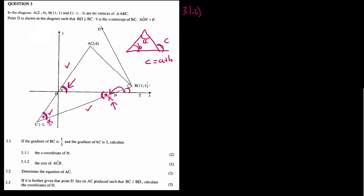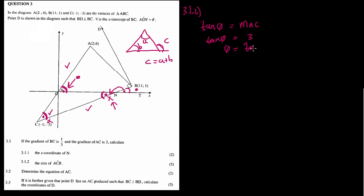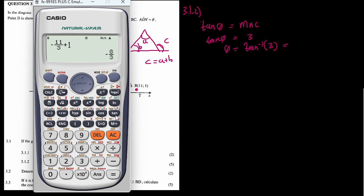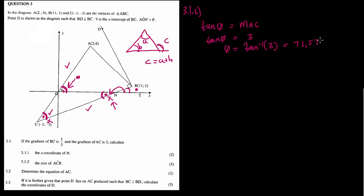So first, calculate the angles of inclination for both lines AC and BC. For line AC: tan(theta) = gradient of AC = 3. So theta = arctan(3) = 71.57 degrees. That's the angle of inclination of AC.